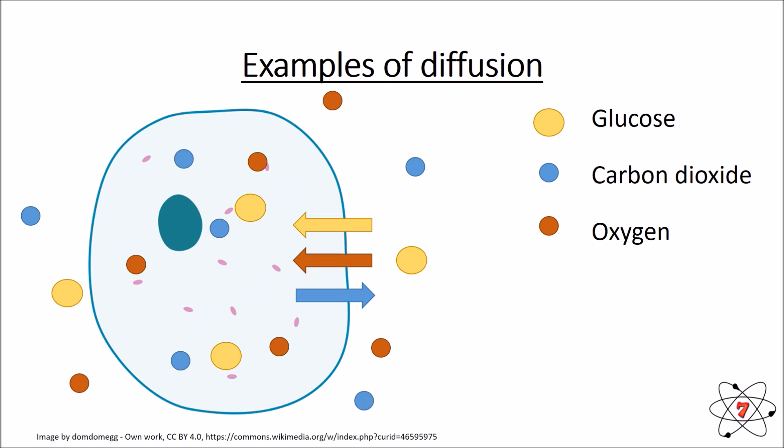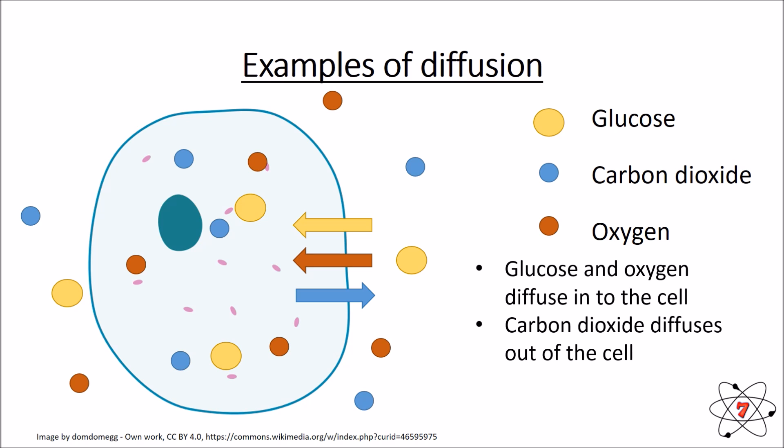What happens after diffusion takes place? We should have an equal concentration on both sides. Glucose moves into the cell, and we have an equal amount of glucose inside and outside. Oxygen moves into the cell by diffusion, giving an equal amount on both sides. Carbon dioxide diffuses out of the cell, leaving an equal amount inside and outside. After diffusion, there is no concentration gradient — the concentration remains the same.